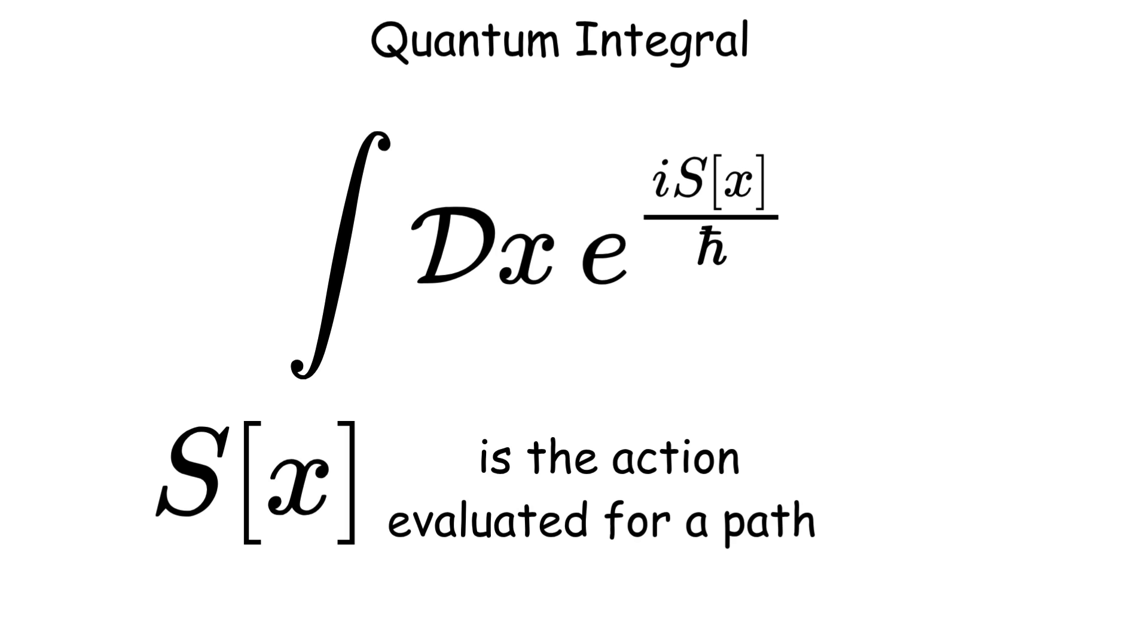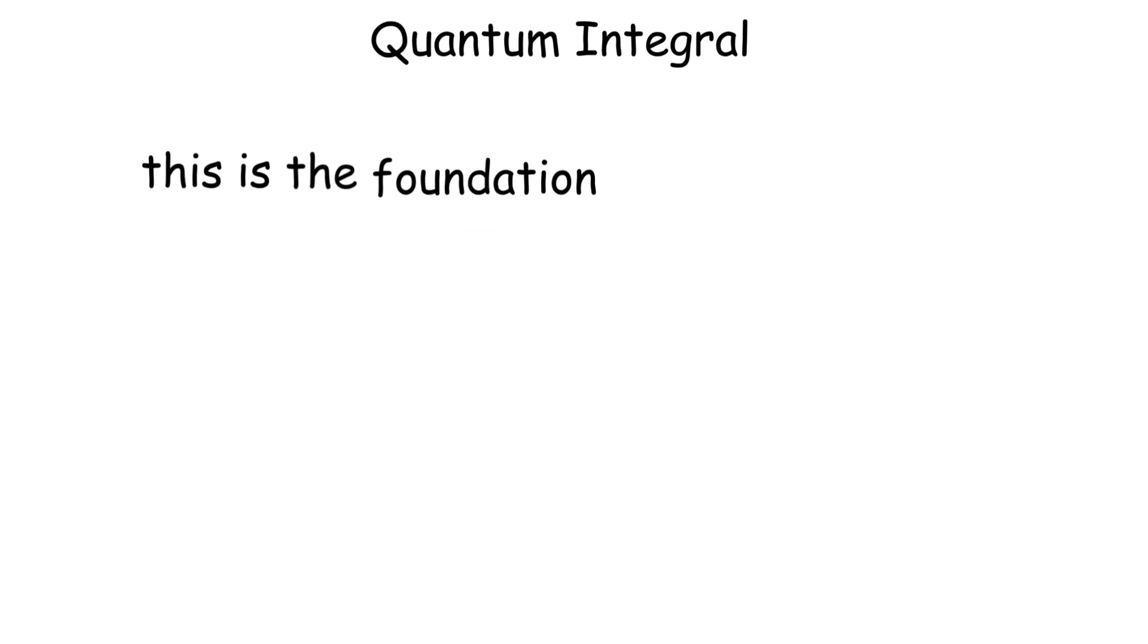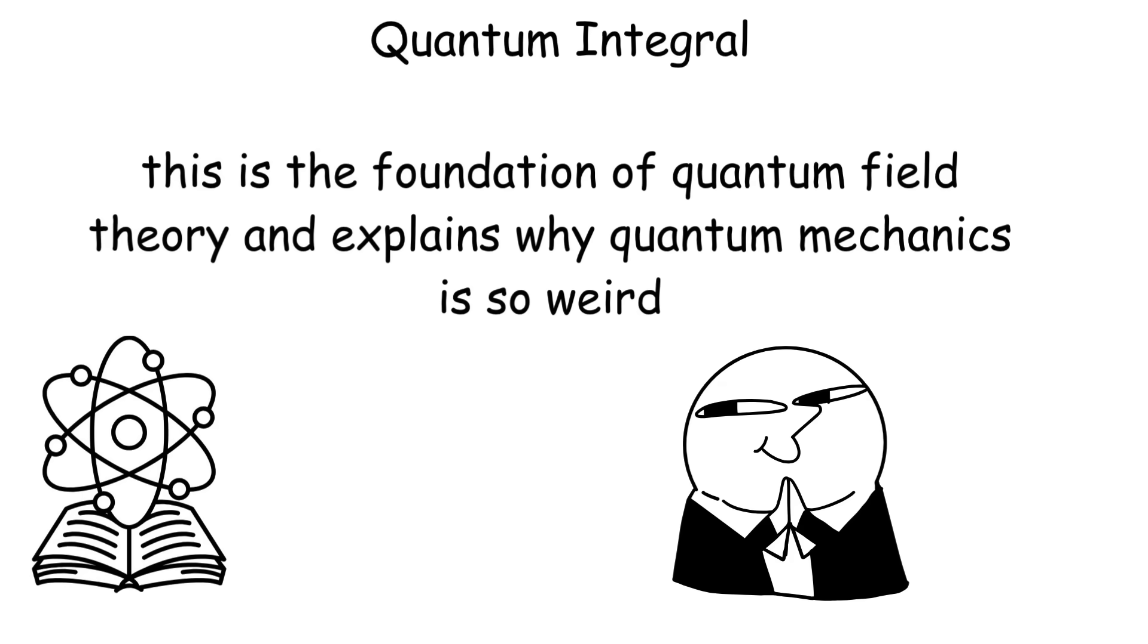Imagine a particle going from point A to point B. It doesn't just take one path. It takes every possible path simultaneously, and you add up all their contributions with different phases. This is the foundation of quantum field theory, and explains why quantum mechanics is so weird.